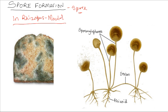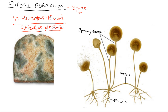Rhizopus is a group of saprophytic fungi that includes Rhizopus stolonifer. Rhizopus stolonifer feeds on dead organic matter, such as the organic matter present on bread. On this piece of bread you can see mold — these molds are Rhizopus stolonifer.